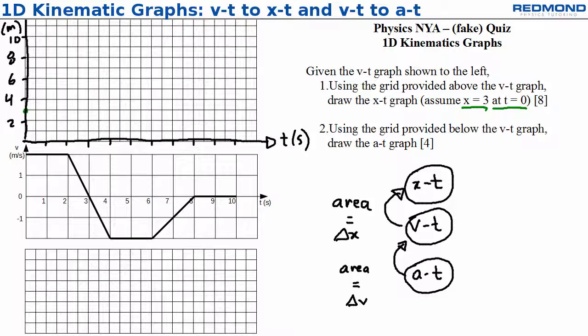For the first second, the area between the time axis and the curve works out to this rectangle with a base of 1 second, a height of 2 meters per second, and an area of 2 meters. 1 second times 2 meters per second equals 2 meters. This gives delta X for the Xt graph, so I add 2 meters to my position at t equals 0, giving a position of 5 meters at t equals 1 second.